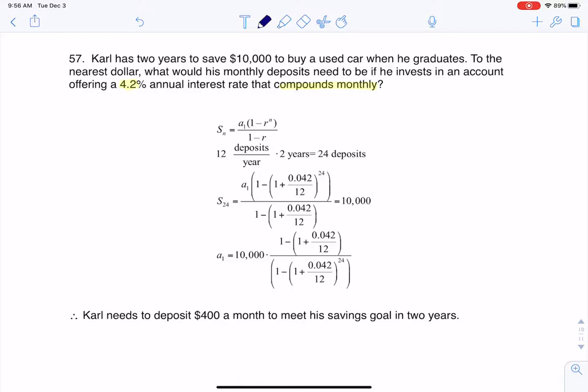The type of account he wants is a savings account, but it's what we call an annuity. An annuity means that you're depositing a fixed amount of money sequentially, and in this case it's monthly.